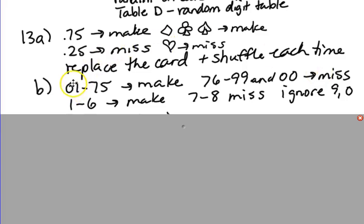So we would use two-digit numbers, and that includes that even when you have a single digit, you put a 0 in front of it to make a two-digit number. So 01 through 75 could represent making a free throw. 76 through 99 and 00, which would represent the number 100 or the number 0, would represent missing a free throw. So you have 75 numbers and 25 numbers.